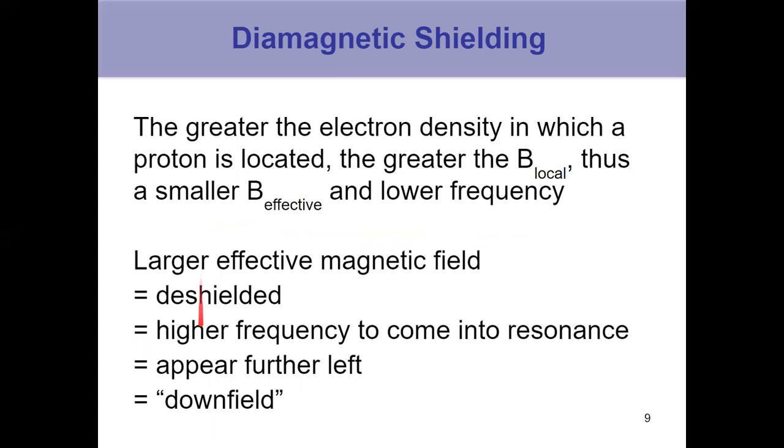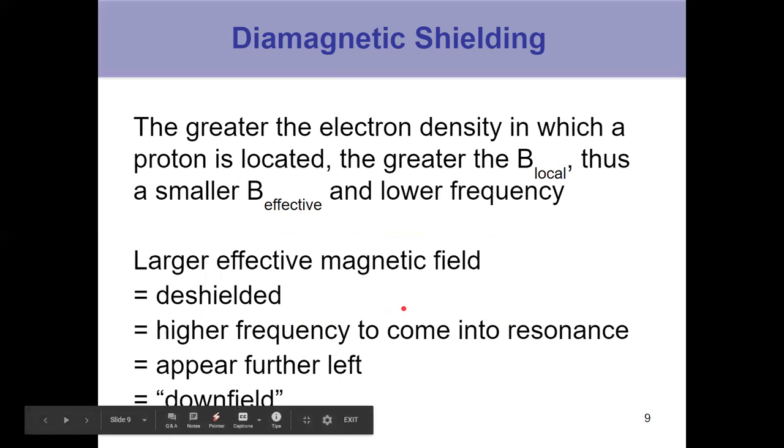This is summarizing all of that nicely for us. A larger effective magnetic field means we're deshielded, means it's a higher frequency for us to come into resonance, a greater energy difference there. So we appear further left, which we call downfield. That's a good thing to remember right now. Downfield means we're further to the left for our NMR spectrum.